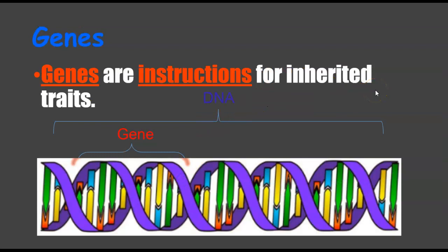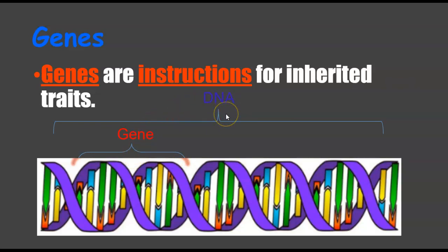Genes are the instructions for inherited traits, and they are found in the DNA. DNA is found in chromosomes, chromosomes are found in the nucleus of a cell, which is found in tissue, then organs, then organ systems, and finally in organisms — any living thing.